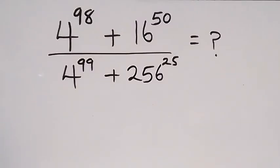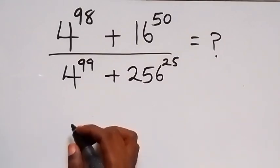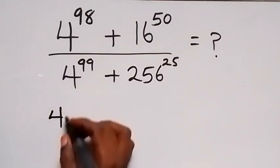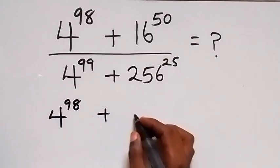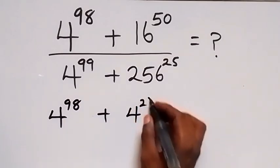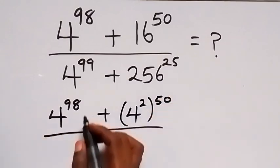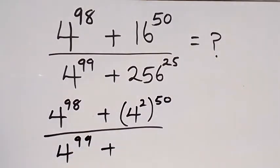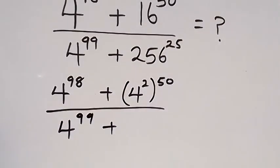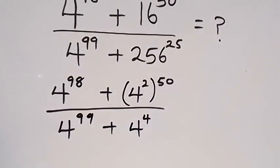Hello, you are welcome. We need to simplify this expression. Let's change everything to base 4. We can write 4 raised to power 98 in the numerator, and 16 can be expressed as 4 squared raised to power 50. In the denominator, we have 4 raised to power 99, and 256 can be expressed in base 4 as 4 raised to power 4.